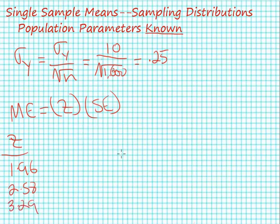I'm going to calculate my first margin of error. I'll use a subscript 95 to indicate it's a 95% margin of error. It's going to equal 1.96 times 0.25, which equals 0.49.